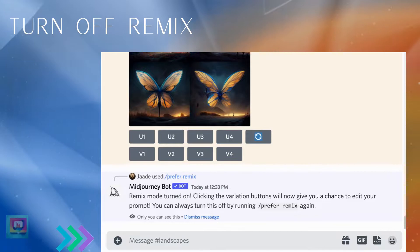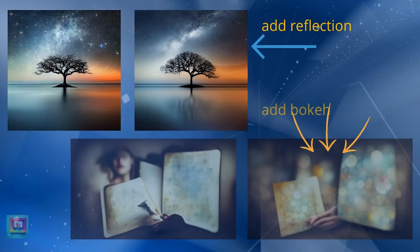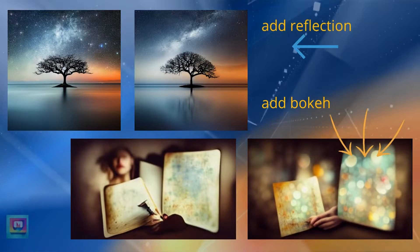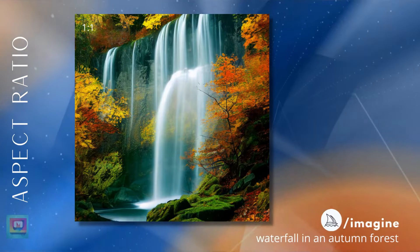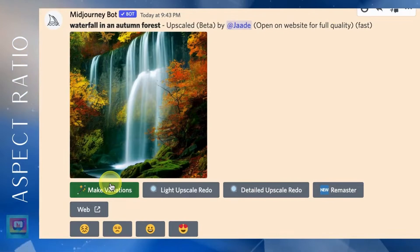Now that we've turned on Remix, let's put it to work. With Remix, you can theoretically change anything in the prompt. For example, I added a reflection of the tree in the water and I added bokeh or blur to the artist's sketch. Let's start by changing a parameter and then we'll add some detail to the prompt itself. You can change or add any parameter, but I'm always forgetting to add an aspect ratio, so I end up with square images. Remix is the perfect tool for me — with Remix, I can fix the aspect ratio.